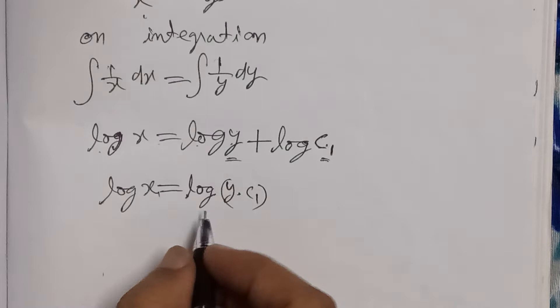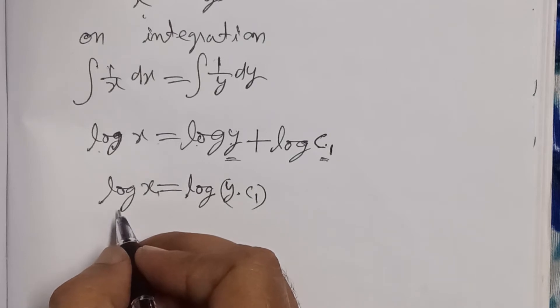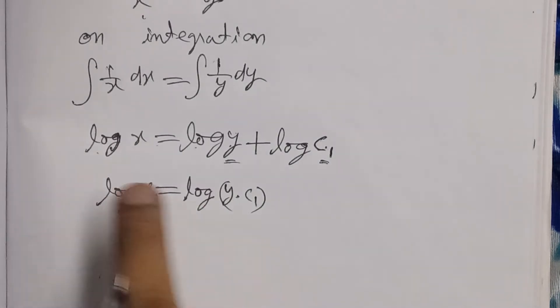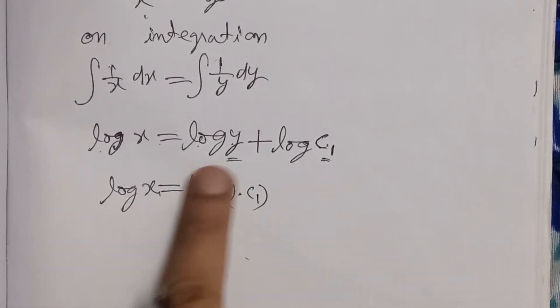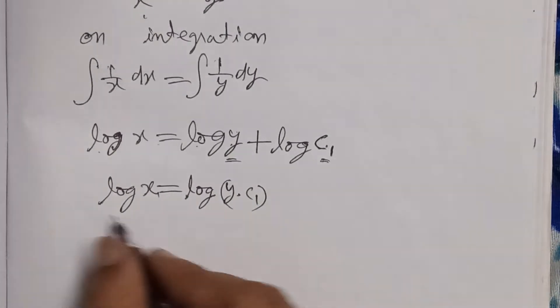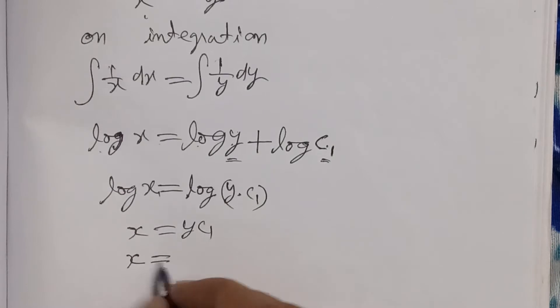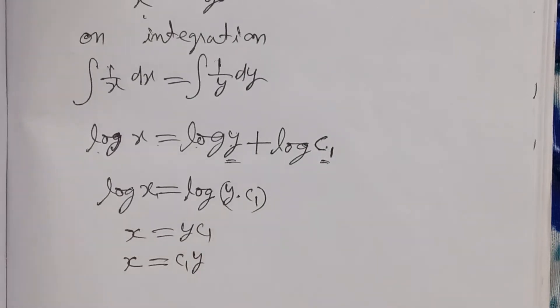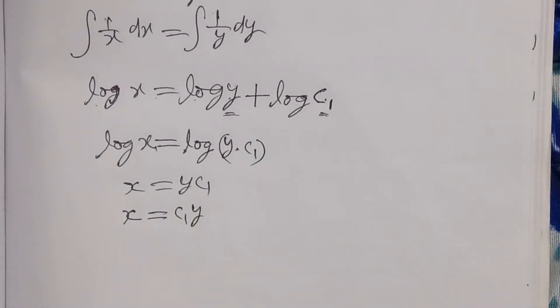We can take out the log by taking antilog on both sides. Removing log from the equation, we get x = y·c1, or x = c1·y. Some writers use constants a and b; we write the first constant as c1 and the second constant as c2.